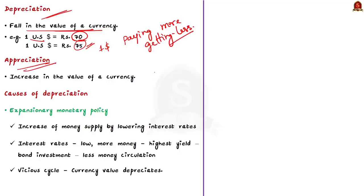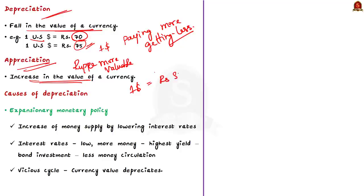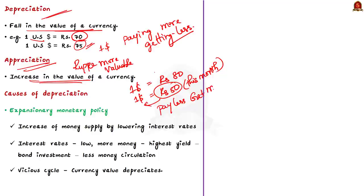On the other hand, appreciation of currency refers to an increase in the value of a currency — it means that the rupee has become more valuable and is strengthening against the dollar. For example, let the value of 1 dollar be equal to rupees 80. But this month, the value of 1 dollar is equal to rupees 50. Just by paying rupees 50, we are getting 1 dollar — we are paying less but getting more. This is called appreciation of rupee.